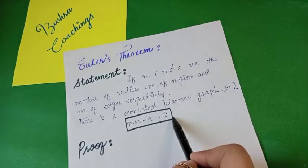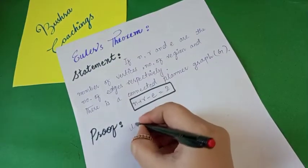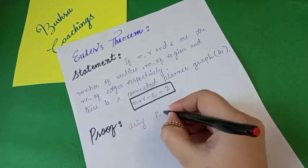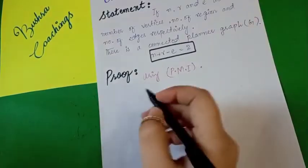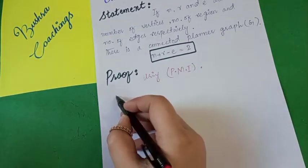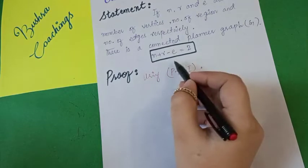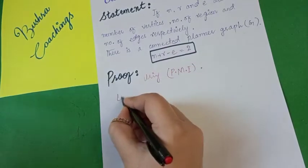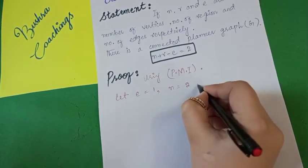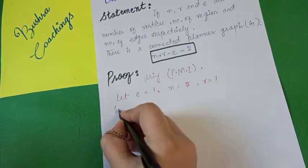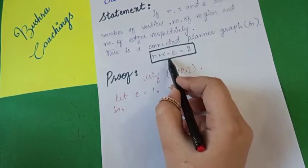We will prove this formula by the principle of Mathematical Induction. First, we let E equal to 1 and prove the formula for E equals 1. Let E equals 1, N equals 2, and R equals 1. Now if we put these values into the formula, we will get satisfaction.